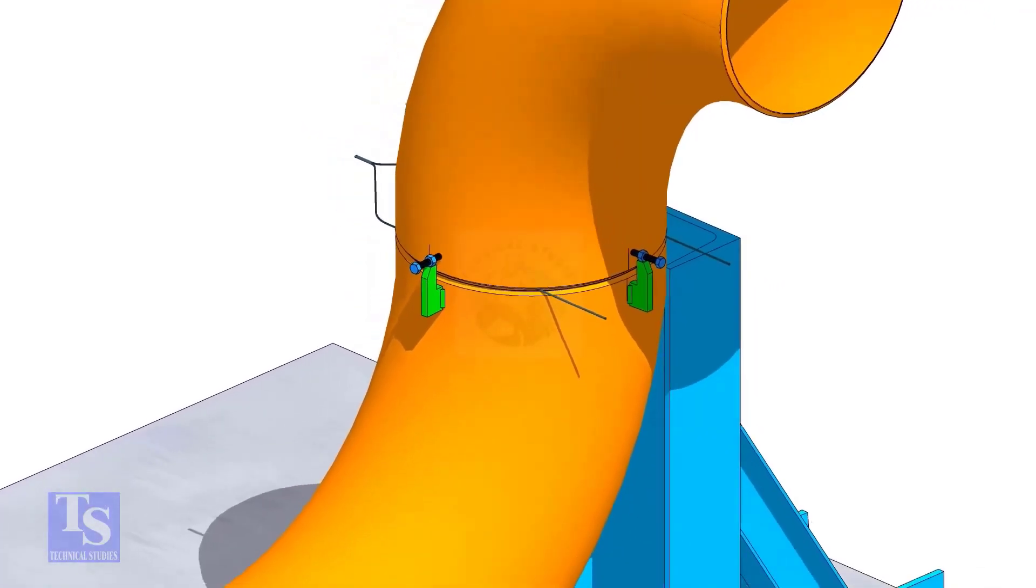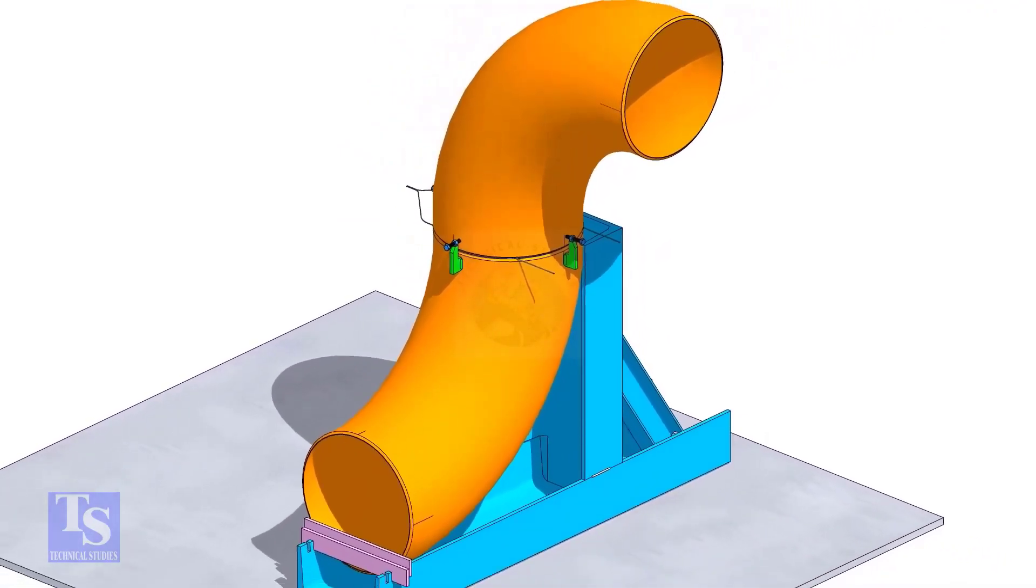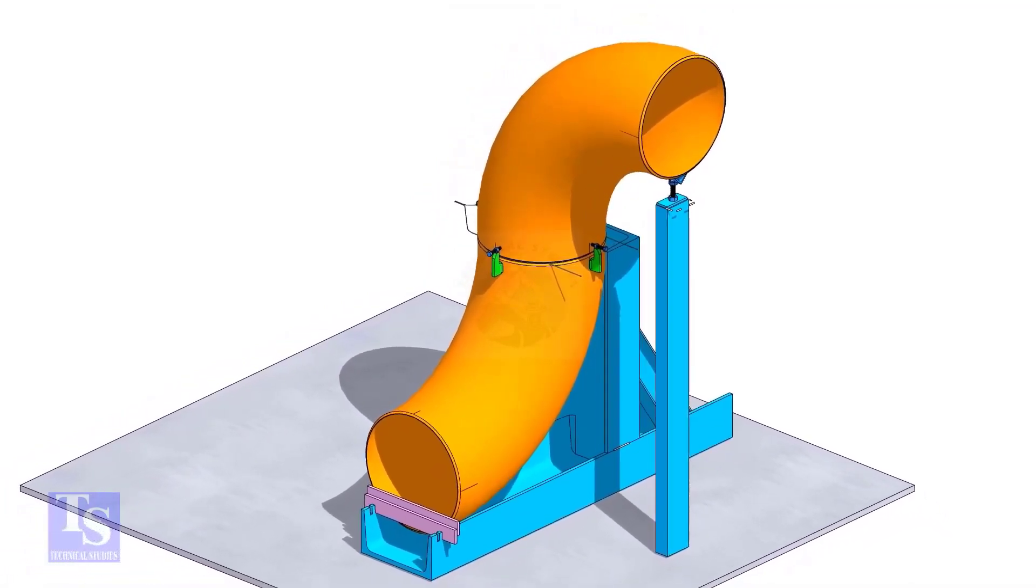Put the other elbow and match the center lines in which direction you want to rotate the elbow. Tack weld an adjustable support below this elbow and adjust the height.